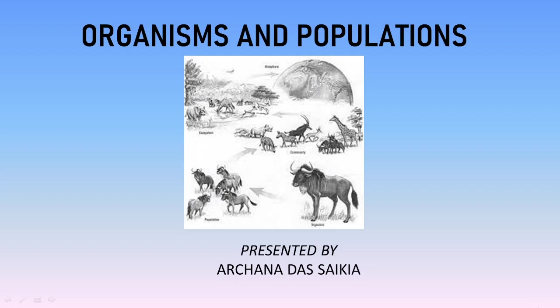Today we will talk about organisms and population, which is the first chapter on the unit ecology and environment. A single organism cannot live alone. There has to be interaction between organisms of the same or different types, as well as with the environment. The aspect where we study the interaction of organisms and populations with the environment or within themselves is known as ecology — the study of interaction among organisms and their physical environment.